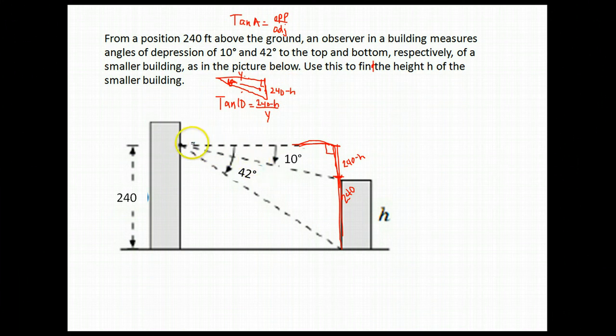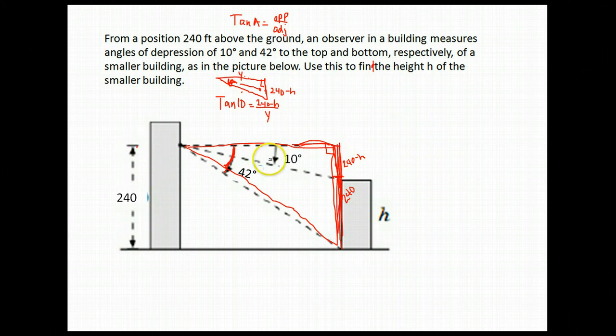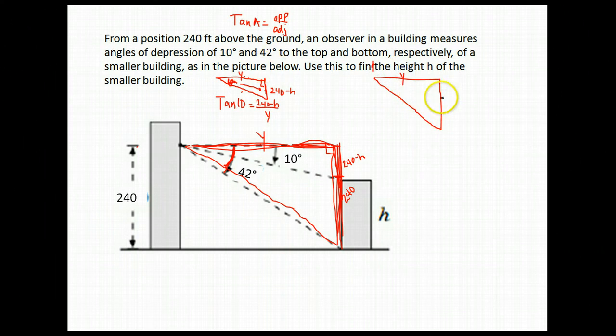Now let's deal with our larger triangle. We have a 42 degree angle here. The entire height is 240. Notice they have the same length here on both triangles. This would be y. I'm going to redraw that triangle over here. This height here is 240 and my angle in this case is 42 degrees.